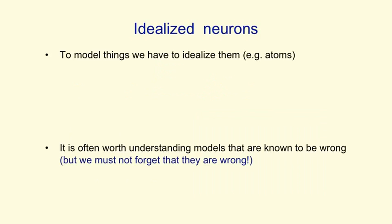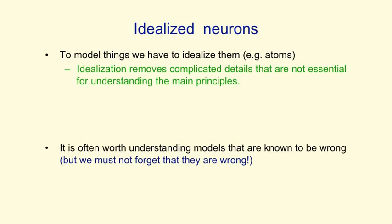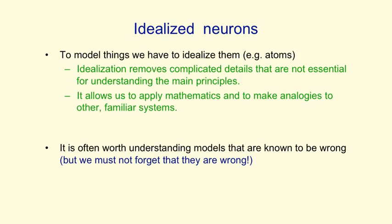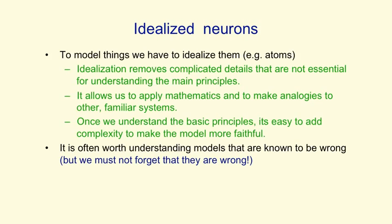In order to understand anything complicated, we have to idealize it. That is, we have to make simplifications that allow us to get a handle on how it might work. With atoms, for example, we simplify them as behaving like little solar systems. Idealization removes the complicated details that are not essential for understanding the main principles. It allows us to apply mathematics and to make analogies to other familiar systems. And once we understand the basic principles, it's easy to add complexity and make the model more faithful to reality.